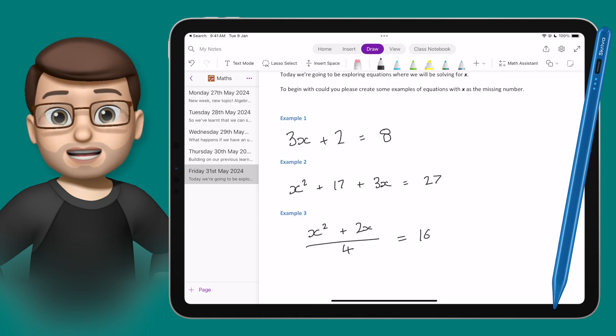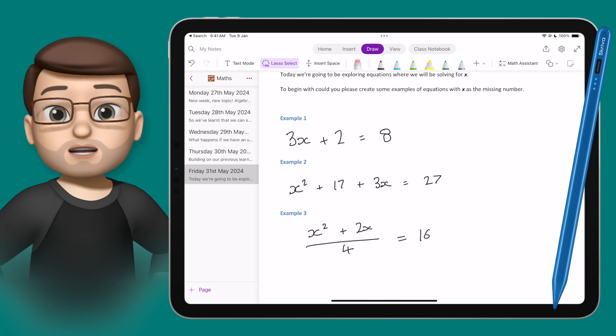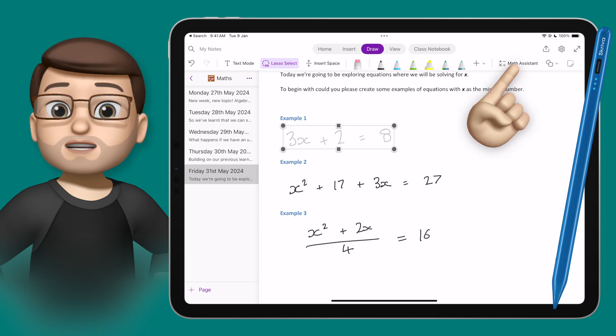But it is a little bit untidy, so really I want to convert that into typed text. This is where the magic comes in. Simply use the Lasso Select tool on the top toolbar, and then using my Scribever Stylus, I'm just going to draw around that equation to select it all in that bubble. Then, on the top toolbar, you're going to go to Maths Assistant.